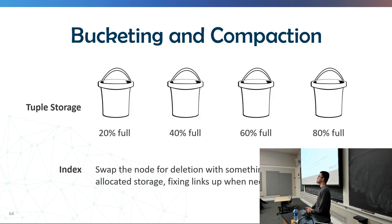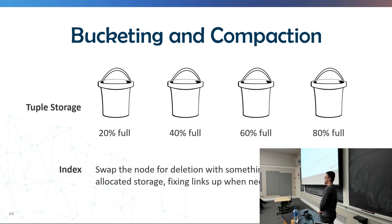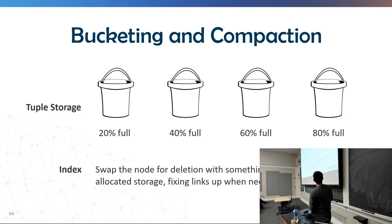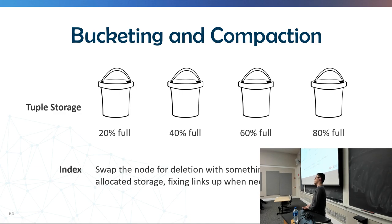Back to memory compaction. For the tuple storage part, we bucket blocks according to their occupancy — in practice there are 20 buckets. When a transaction commits, we check if a compaction threshold is reached. If so, we merge less-full blocks with fuller ones — for example, taking a 20%-full bucket and merging it with an 80%-full one. For indexes, since we use tree indexes, whenever we remove a tuple we swap it with the element at the end of the index and rebalance.